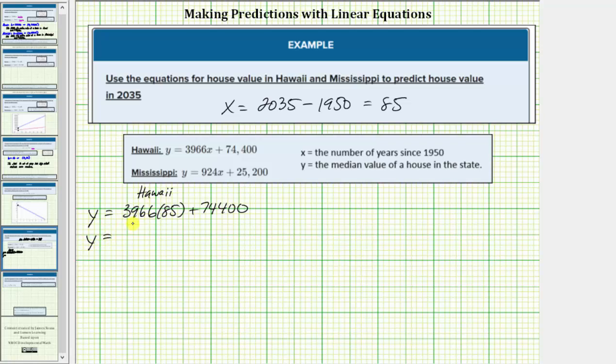So we have y equals—this product is equal to 337,110, and this sum is equal to 411,510.